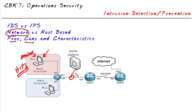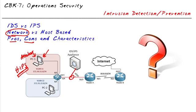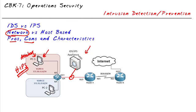Like in The Wizard of Oz where they asked, 'Are you a good witch or a bad witch?' — an IPS/IDS device asks: are you a good packet or a bad packet? How does it know? The two major approaches for identifying whether a packet is malicious are through a signature match or by using some type of anomaly detection.